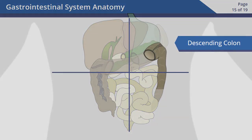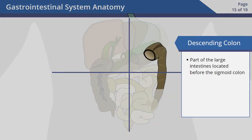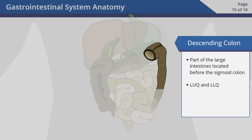The descending colon is part of the large intestines, located just before the sigmoid colon in the left upper quadrant and the left lower quadrant. This part of the colon stores feces to be emptied into the rectum.